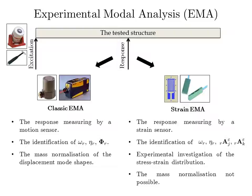The classic experimental modal analysis can be used for the identification of natural frequencies, damping, and displacement mode shapes. The strain experimental modal analysis can similarly identify natural frequencies, damping, and displacement mode shapes. Additionally, strain mode shapes can be identified, which contain information about the strains corresponding to the displacement mode shapes. A benefit of the strain experimental modal analysis is that it can be used for experimental investigation of stress-strain distribution without building a mathematical model.